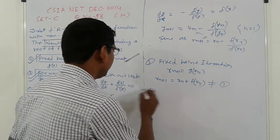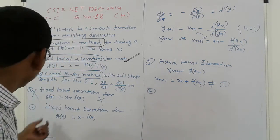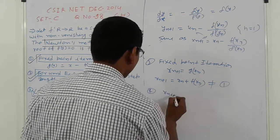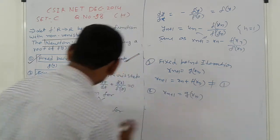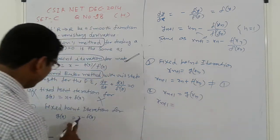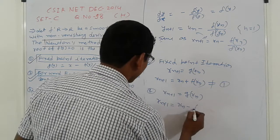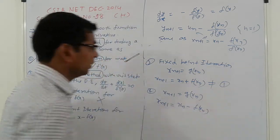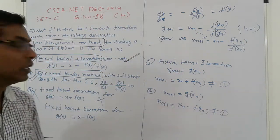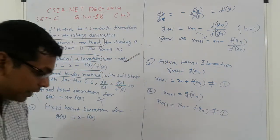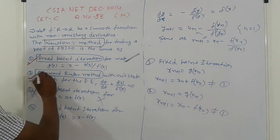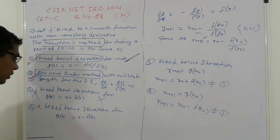For option four, fixed point iteration again: x_{n+1} is equal to g(x_n). Checking: x_{n+1} is equal to x_n minus f(x_n), but this is not equal to Newton's method formula. So option four is also wrong. It is clear that options one and two are correct, and options three and four are wrong.